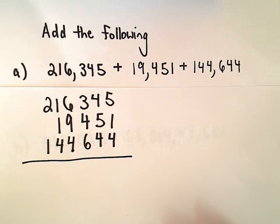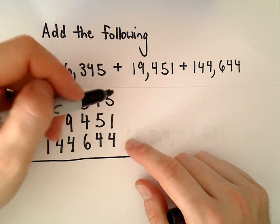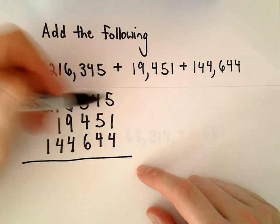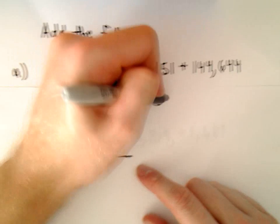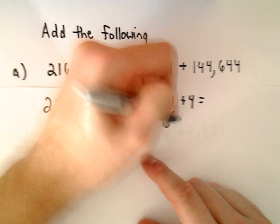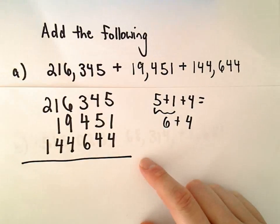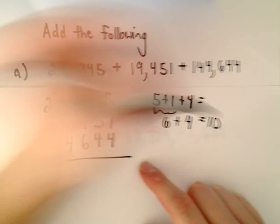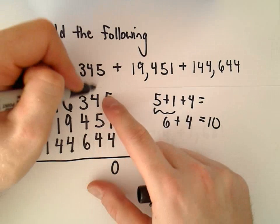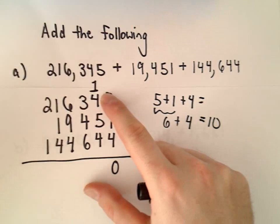All right, so I'm just going to look at everything one column at a time. So if I add the first column, the rightmost column, I'm going to add 5 and 1 and 4. Well 5 plus 1 is going to give us 6, and then 6 plus 4 is going to give us 10. Okay, so just like before I'm going to drop down the 0 and I'm going to carry the 1, stick it right there.